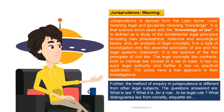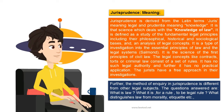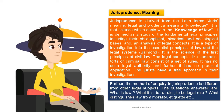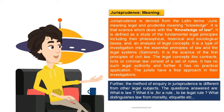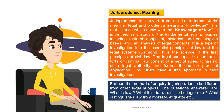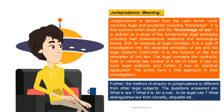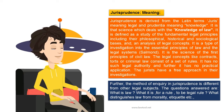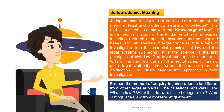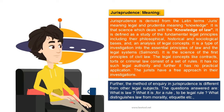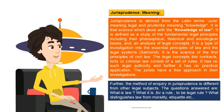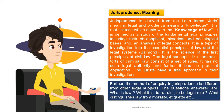Unlike legal concepts such as contracts, torts, or criminal law — which consist of sets of rules — jurisprudence has no such legal authority and no practical application. Jurists have a free approach in their investigations, and the method of inquiry in jurisprudence is different from other legal subjects. The questions answered include: What is law? What is it for a rule to be a legal rule? What distinguishes law from morality, etiquette, etc.?